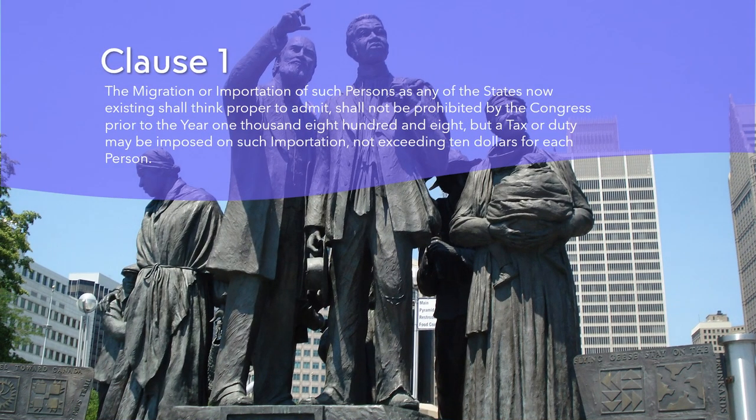Clause 1. This is one of the clauses that deal with the issue of slavery in the founding document of the United States and reflects the compromise between the Northern and Southern states during the Constitutional Convention of 1787. The Northern states wanted to end the slave trade as soon as possible, while the Southern states wanted to preserve it for as long as possible. The clause was a way to postpone the decision on this controversial matter for another 20 years, hoping that by then the situation would change or a solution would be found.